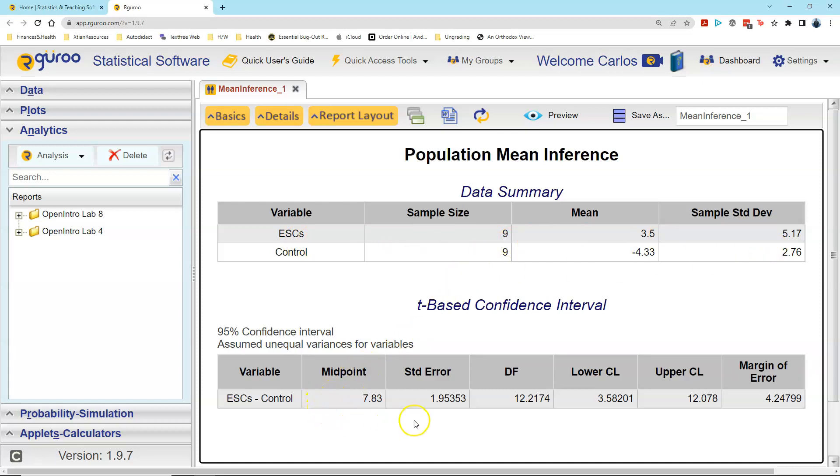And then down below, notice what I'm given. I have the standard error calculated for me to three decimal places, 1.953. That matches 1.954, so that's a good thing to check. The degrees of freedom to two decimal places is 12.22. Notice I have the lower bound of my confidence level, 3.58 to two decimal places, and 12.08 to two decimal places for the upper confidence level endpoint. And then we also get the margin of error. That would be 4.25 to two decimal places. So we get all of that information from our guru.